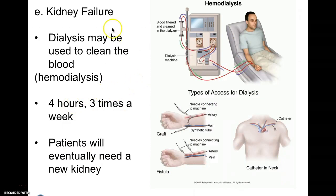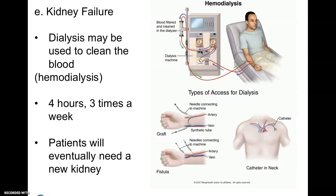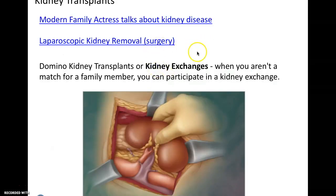Kidney failure may result in dialysis, which cleans the blood. Some people need it for four hours, three times a week — it's a significant burden. Patients will eventually need a new kidney. Dialysis is essentially a machine that does the filtering for you: your blood goes in, it filters everything — performing the process your kidneys would — and then puts the filtered blood back in. If we have time, we'll watch a kidney transplant video, which is pretty cool.